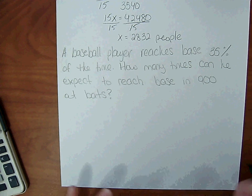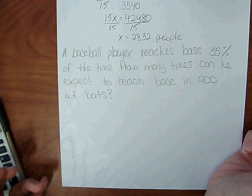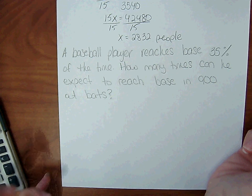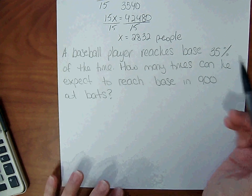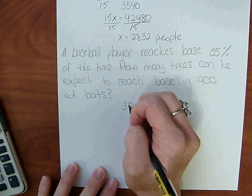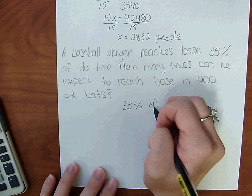So we are going to find percent of a number. Remember, probability is a fraction, so it can be written as a percent. So here it does not make sense to use a proportion. So he's going to reach base 35% of the time: 35% of 900.